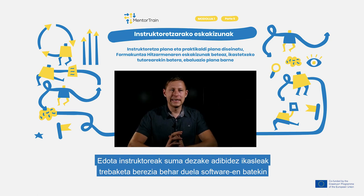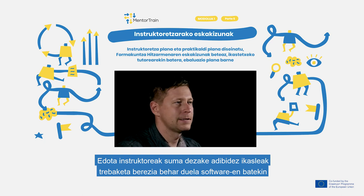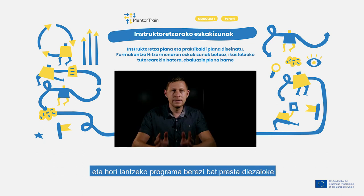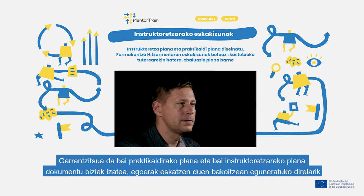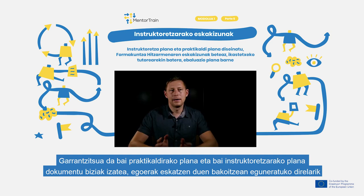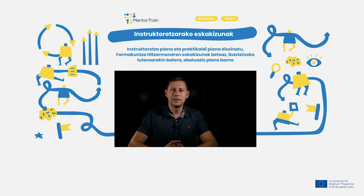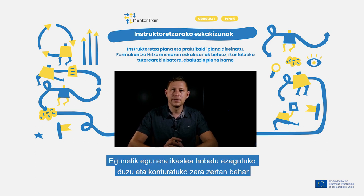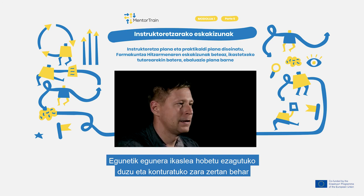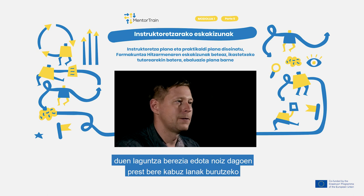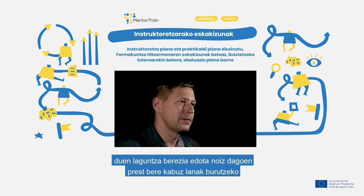For example, the mentor does some work together with the apprentice, and next time the apprentice will do that alone. Or the mentor can see the apprentice needs some training, for example in working with Excel, and will arrange a special training for them. It is important to see the mentoring plan and the apprenticeship plan as a dynamic document that you will update whenever needed, because every day you get better knowledge about your apprentice and see where some help is needed, or gain trust that the apprentice can already handle certain work alone.